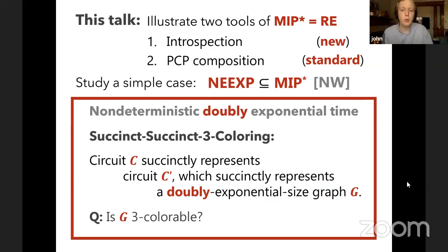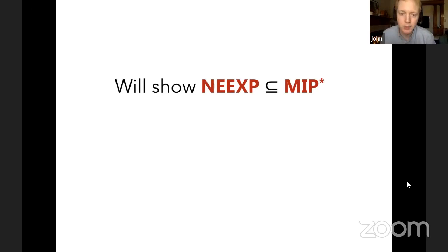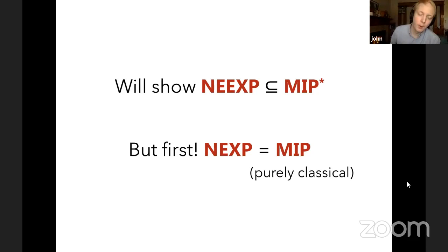I'll introduce these two new tools in the context of NEEXP contained in MIP*. First, it's helpful to survey the classical result NEEXP equals MIP from 30 years ago. In MIP, the provers are classical — they don't share entanglement. I'll give a high-level overview that picks out ideas useful for our quantum protocol. Showing NEEXP equals MIP entails giving an MIP protocol for the succinct three coloring problem, which is the canonical NEXP-complete problem.